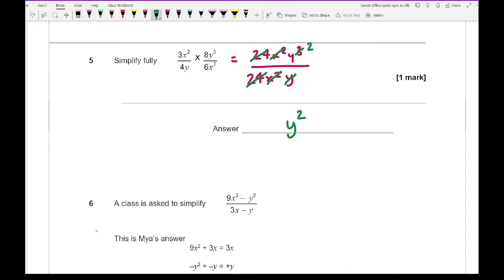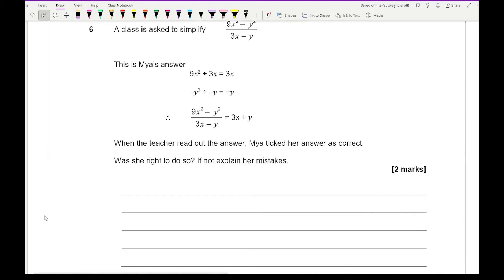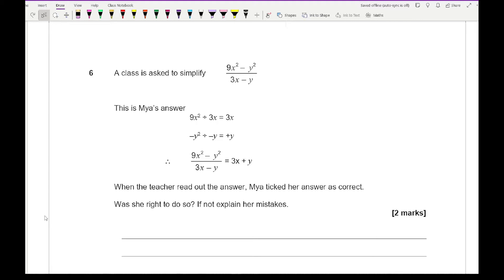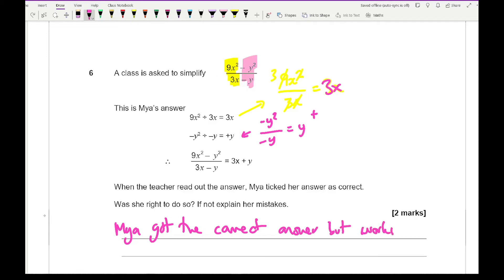For question six a class is asked to simplify 9X squared minus Y squared over 3X minus Y. This is Maya's answer. What she's done is taken each of these two parts separately. She's done 9X squared over 3X and cancelled the X and cancelled the 3, leaving her with 3X. With the pink part she's done minus Y squared over minus Y which leaves her with positive Y, then simply added those two things together. When the teacher reads out the answer, Maya ticks her answer as correct. Was she right to? Maya got the correct answer but her working out is wrong.